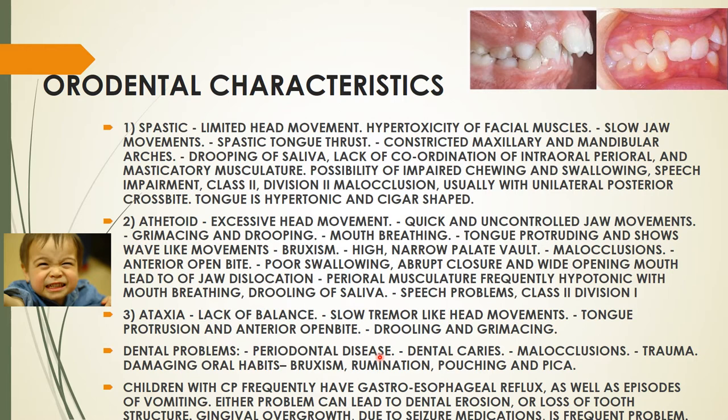Bruxism involves clenching or grinding of the teeth. Rumination is the re-chewing or regurgitation and re-swallowing of previously ingested food — the patient regurgitates food and re-swallows it. This habit causes acidic stomach content to travel into the mouth and can lead to erosion. Pouching is the placement of food between the cheeks and teeth for a long period of time, which can lead to dental caries.